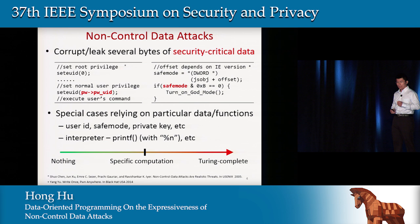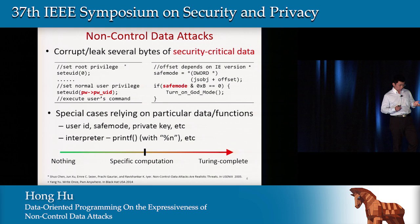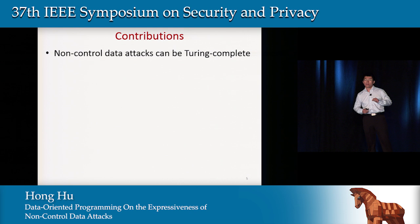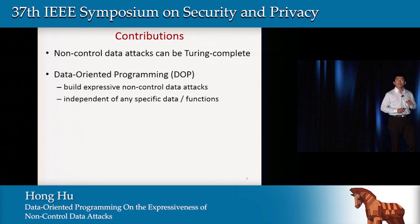Some attacks, like control flow binding, require particular functions such as printf to build attacks. So what if the vulnerable program doesn't have any critical data or functions like this? In that case, what can attackers do? I'm going to show you that non-control data attacks can be Turing-complete.